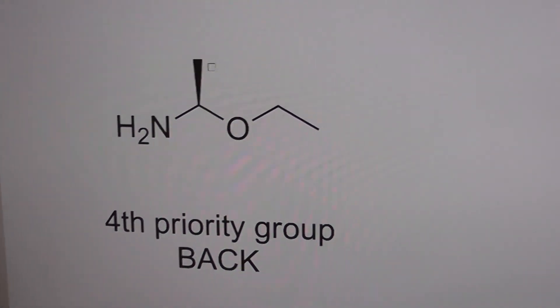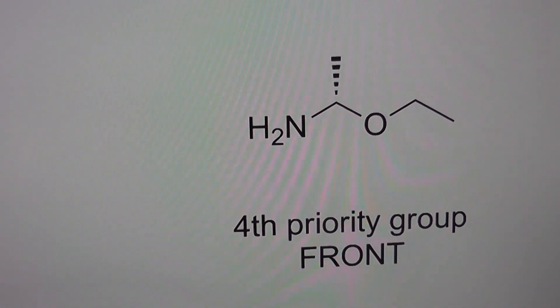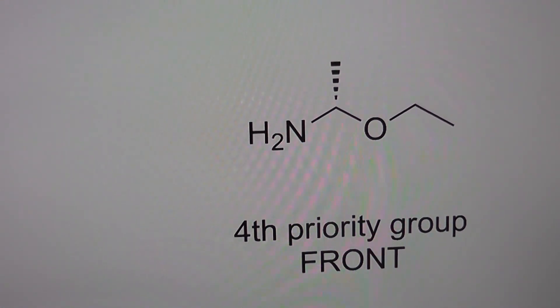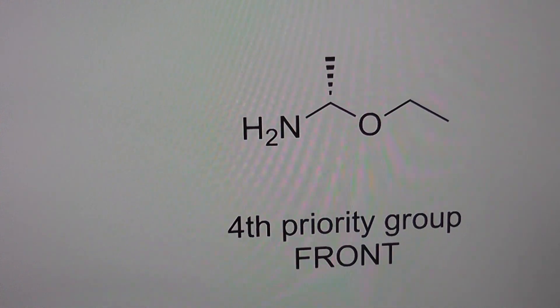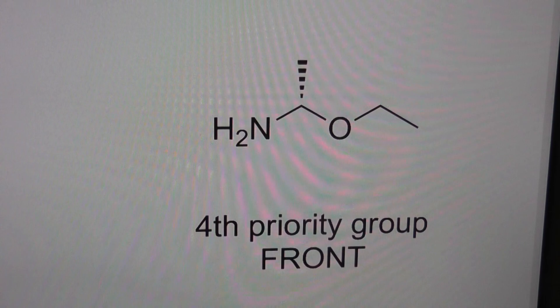Now let's look at another case. Here we have a rather similar molecule. We have the same substituents, but now the methyl group is to the back. The fourth priority group, the hydrogen, is to the front. What can we do in this case?